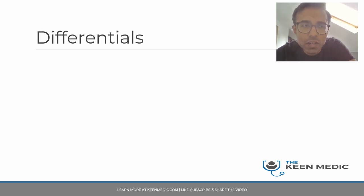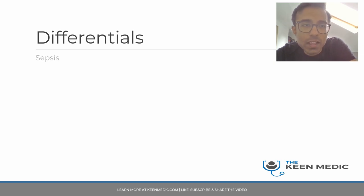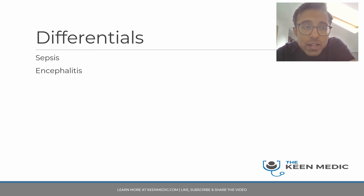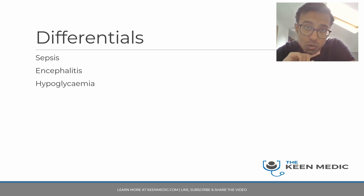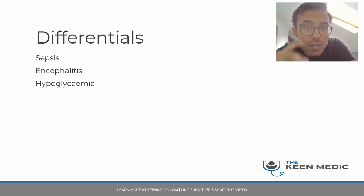As a medical registrar, there are dozens of differentials for a patient presenting with confusion, but the key ones here include: sepsis — which is what the A&E team thought; encephalitis — definitely one to consider with new onset confusion and a high heart rate; and hypoglycemia — she is on insulin for type 2 diabetes, so it is very likely she may have been going through a hypoglycemic episode. We deliberately did not give you the blood sugar to keep hypoglycemia on the list.